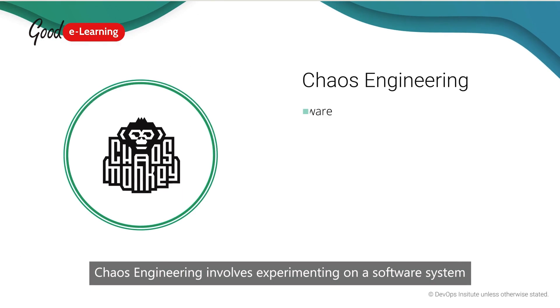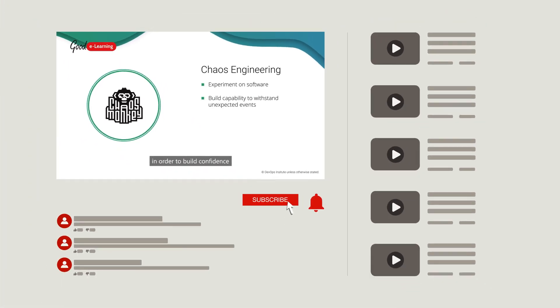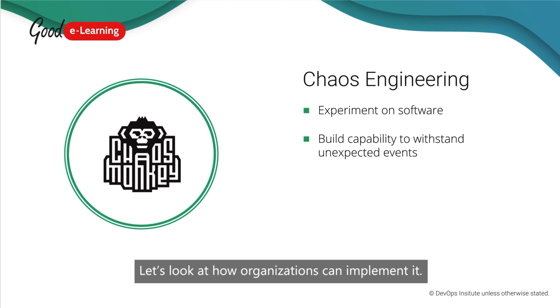Chaos engineering involves experimenting on a software system in order to build confidence in its capability to withstand turbulent and unexpected conditions. Let's look at how organizations can implement it.